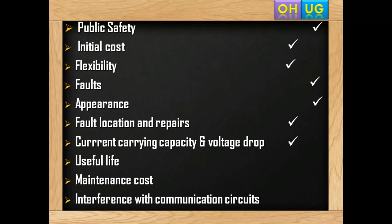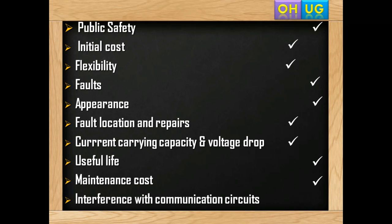For interference with communication, overhead lines are problematic. For useful life, underground scores better. Coming to maintenance cost, the underground system plays a role. Overhead lines will interfere with communication lines, so underground is preferred for that factor.